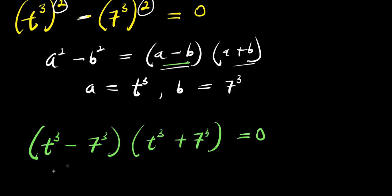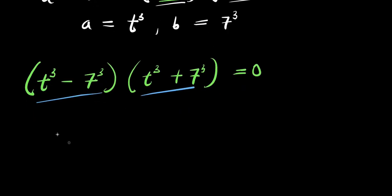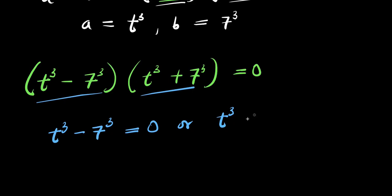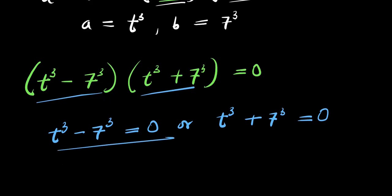We are now going to solve each of these by equating each factor to 0. So we have t to the power of 3 minus 7 to the power of 3 equals 0, or t to the power of 3 plus 7 to the power of 3 equals 0.